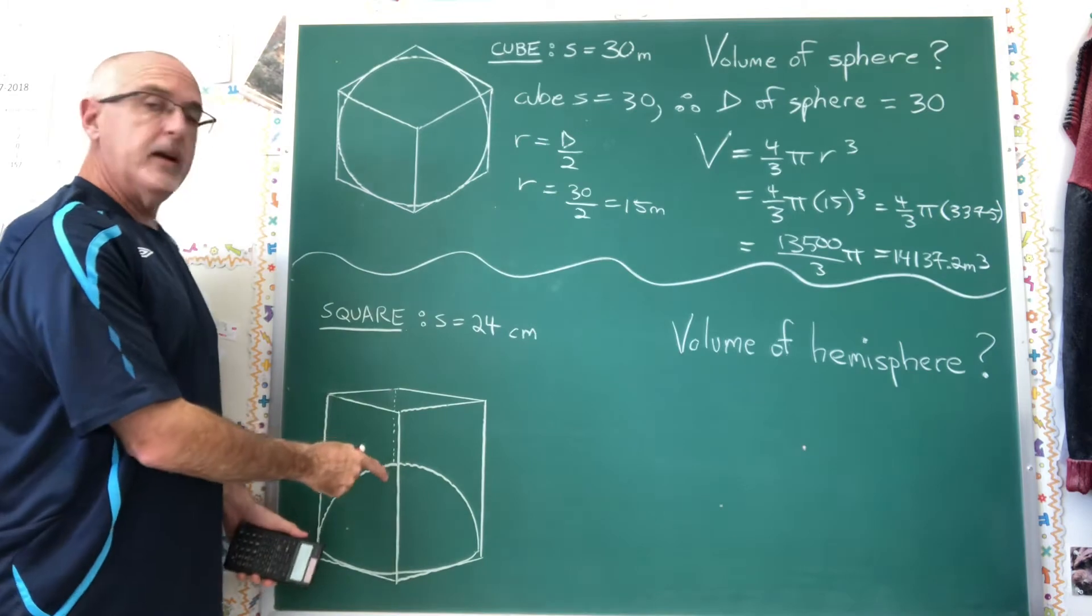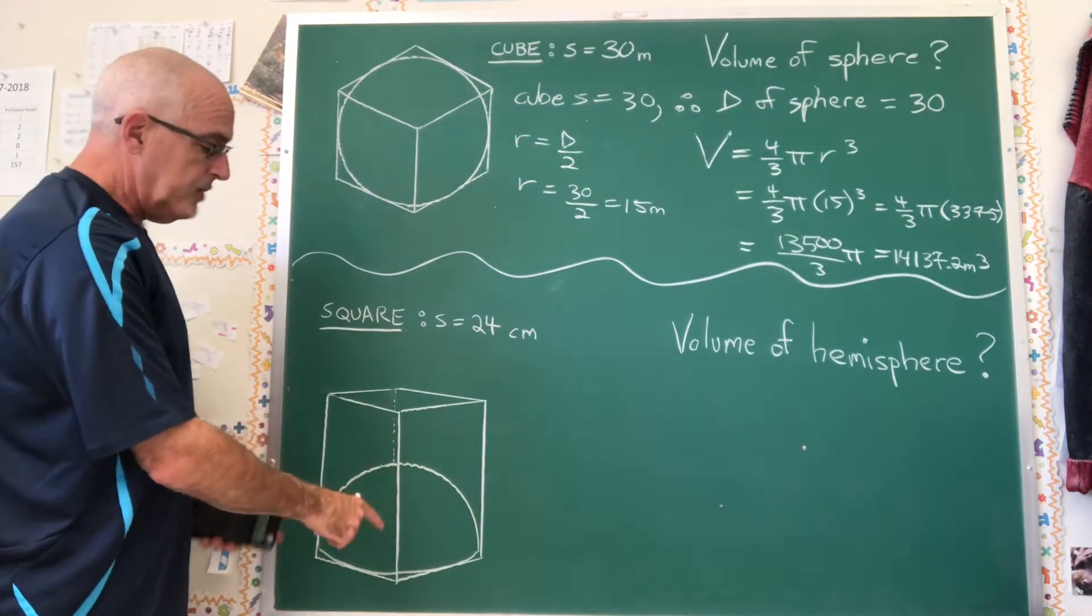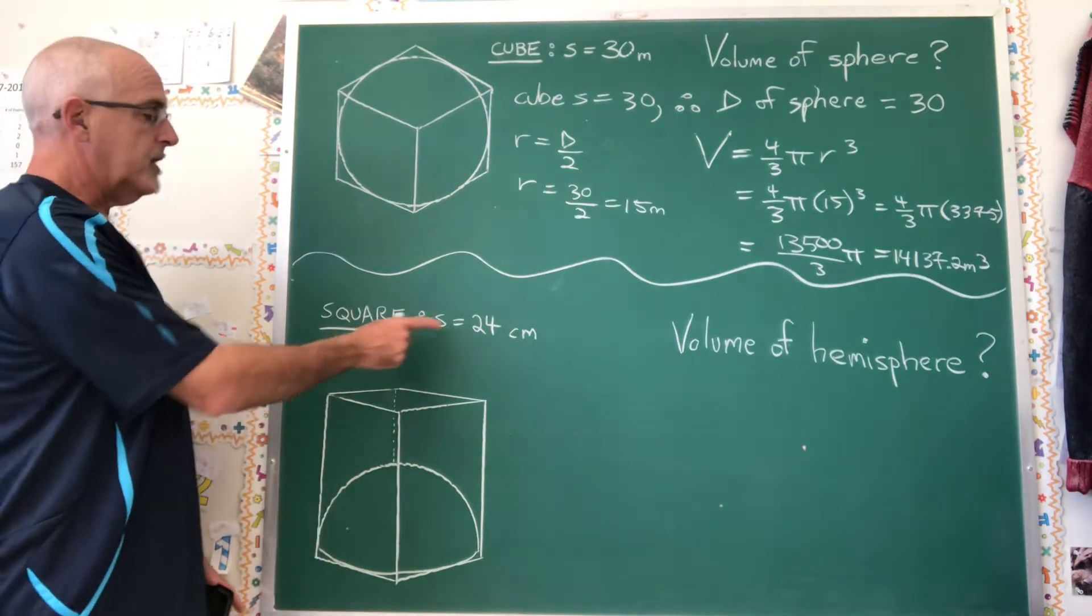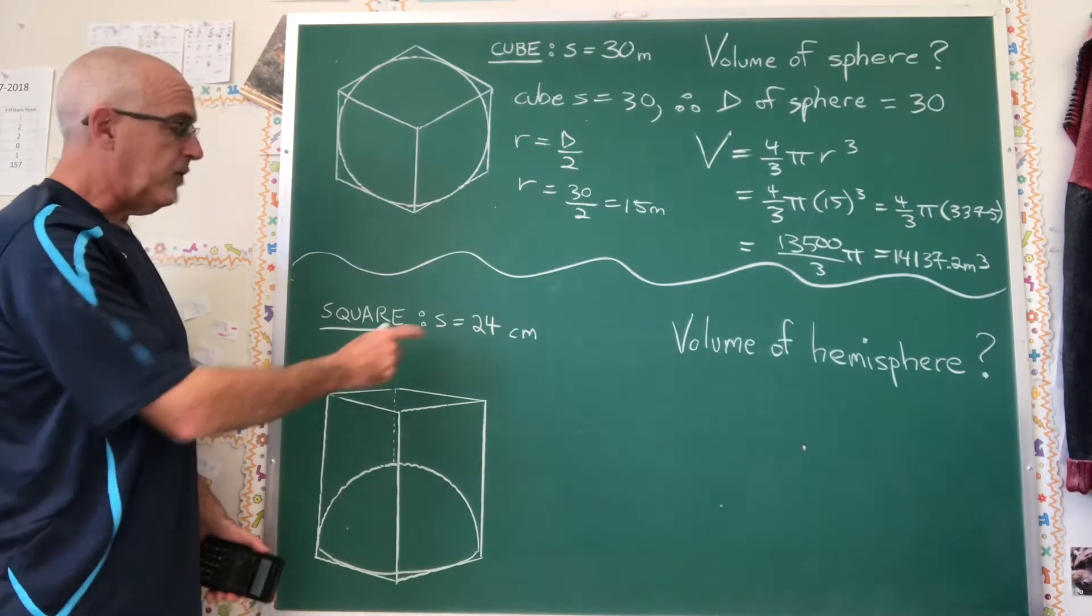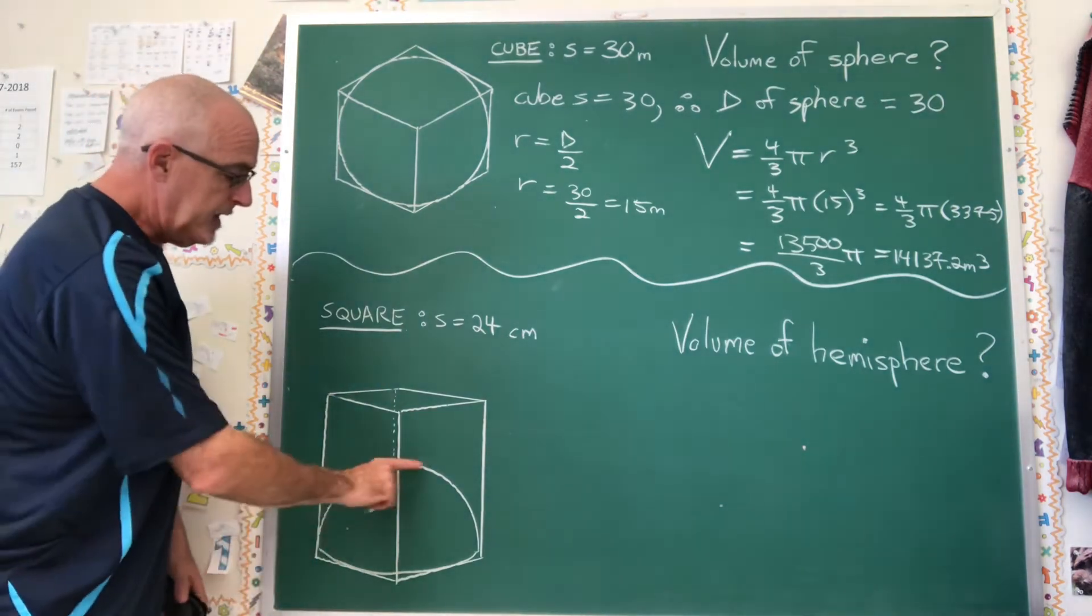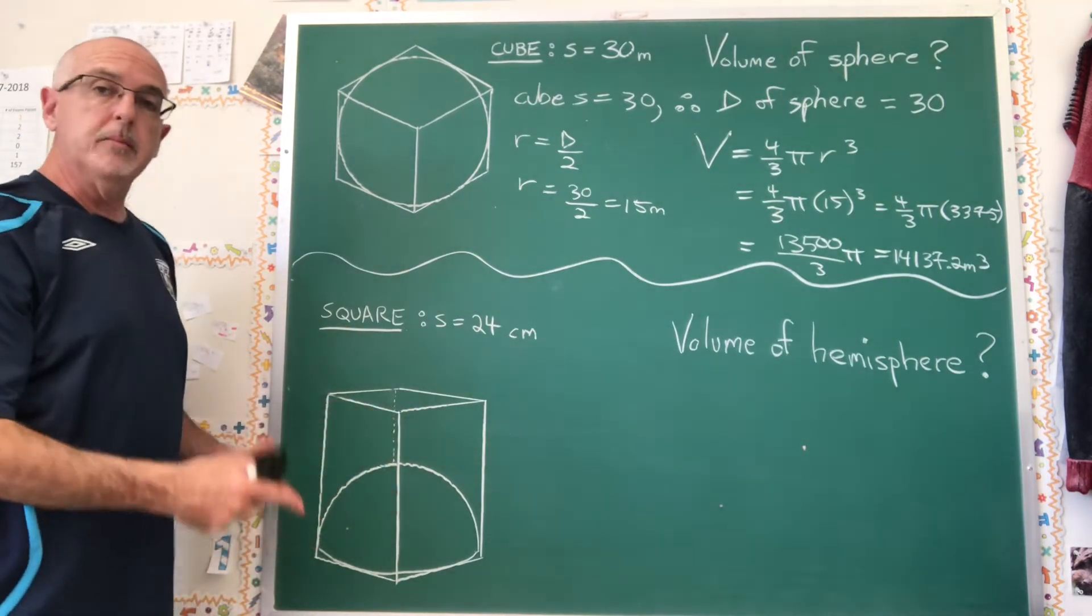Now here we have a hemisphere which is also fitting just barely inside a right prism with a square base. We have to know that the base is square, and we have been told that the side length of the square is 24 centimeters. Now I can't say this is inscribed because the top of the hemisphere isn't going up to the top of the right prism, but that doesn't matter.